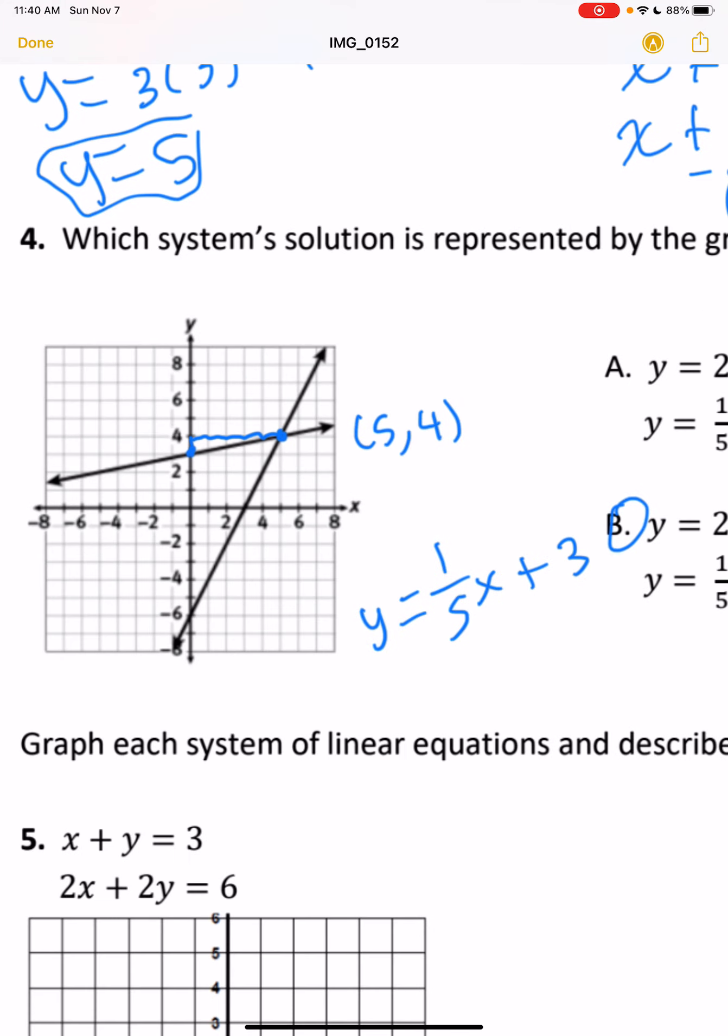So the other equation starts at negative 6. So our y-intercept would be negative 6. And then it goes up 1, 2, 3, 4, and rises 2. So 4 over 2x also simplifies out to 2x minus 6.